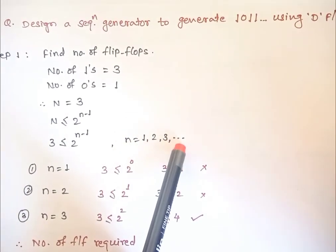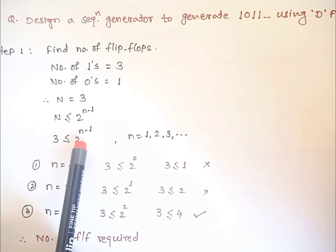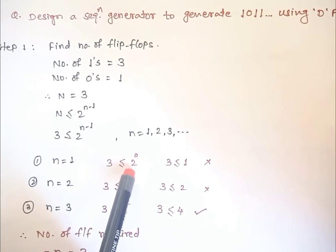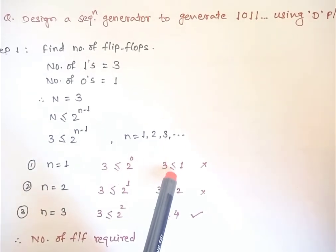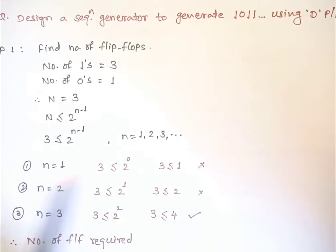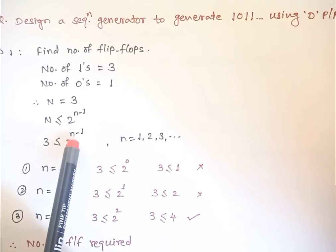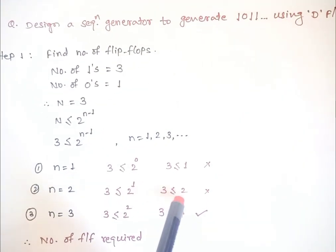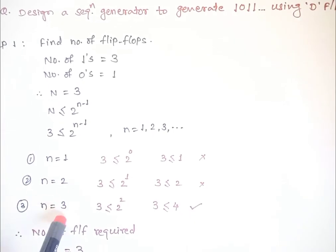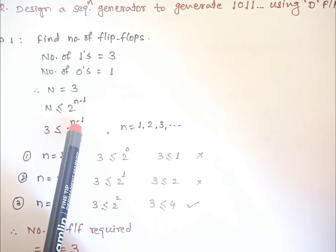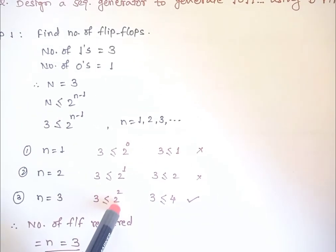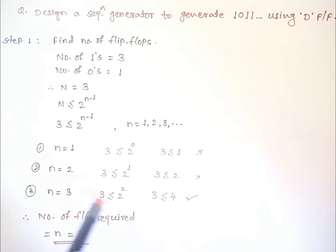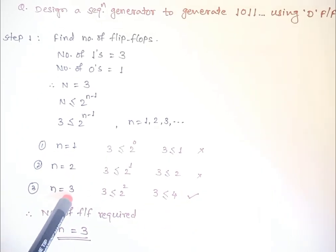Now find small n from the formula by trying n = 1, 2, 3, and so on. If n = 1: 2 raised to (1−1) = 2 raised to 0 = 1, which does not satisfy 3 ≤ 1. If n = 2: 2 raised to (2−1) = 2, which does not satisfy 3 ≤ 2. If n = 3: 2 raised to (3−1) = 4, and 3 ≤ 4 holds true. Therefore, the number of flip-flops required is n = 3.